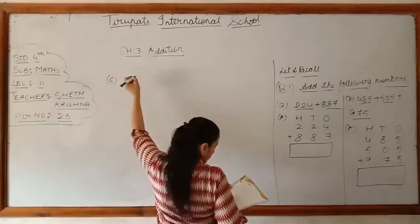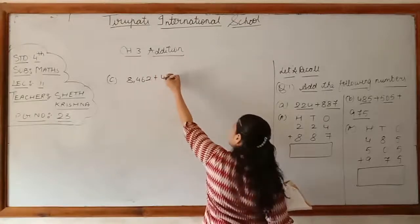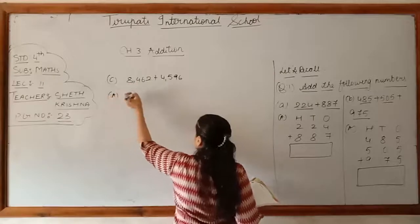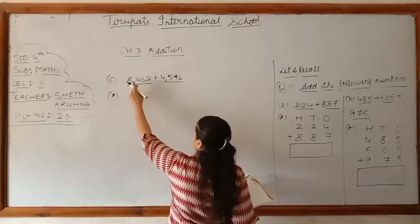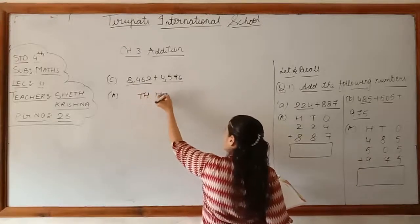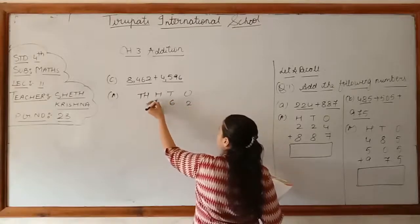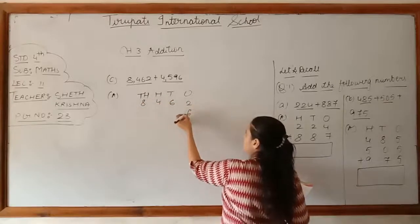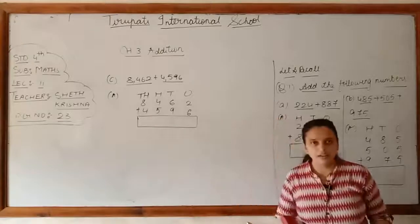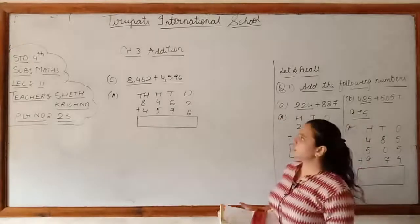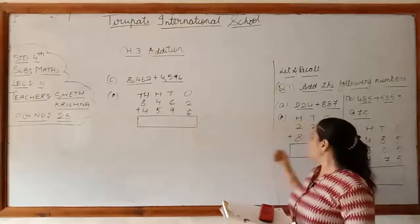Part C: 8,462 plus 4,596. Here both numbers have four digits. Write ones, tens, hundreds, and thousands. The digits are: 2, 6, 4, 8 and 6, 9, 5, 4. Add all four digits in each column. Part D has the same four-digit format — do that one yourself.